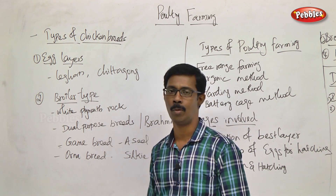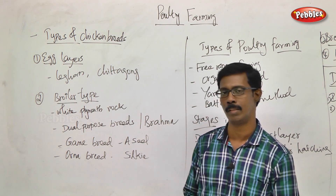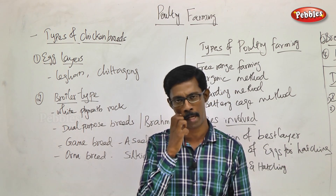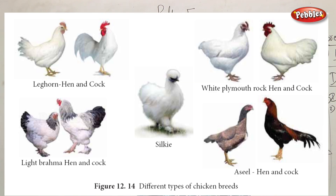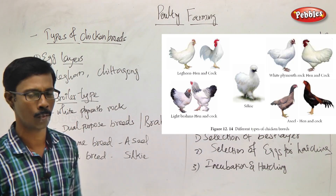In India, there is another common type — we are talking about Chittagong. For appearance, the Leghorn type is brown, yellow, or dark yellow in color. Chittagong is found in West Bengal, North India. It is also reddish in color. The primary purpose of both Leghorn and Chittagong is egg layer. The other type is the broiler type, which is different — meat is the primary purpose.